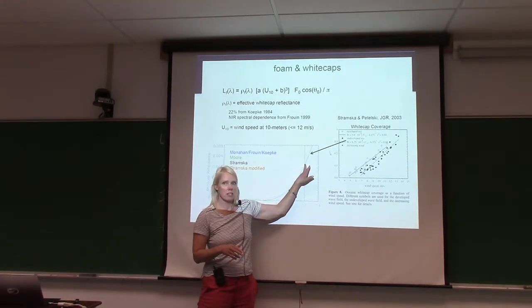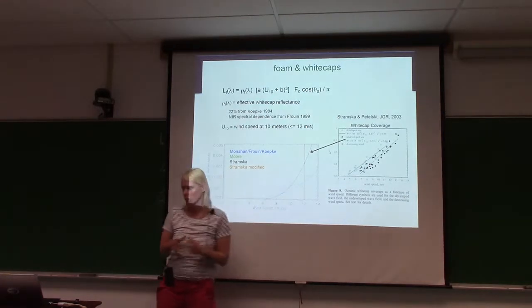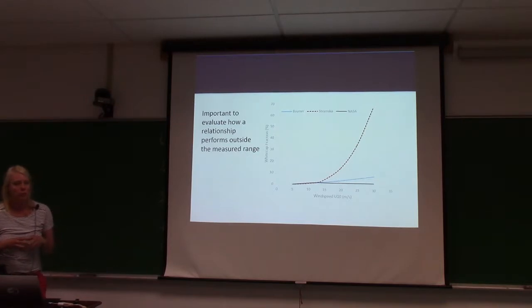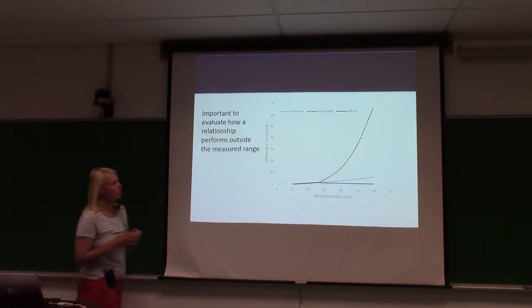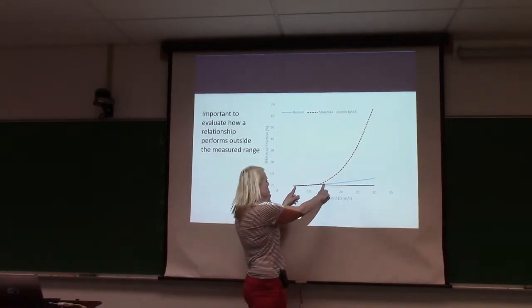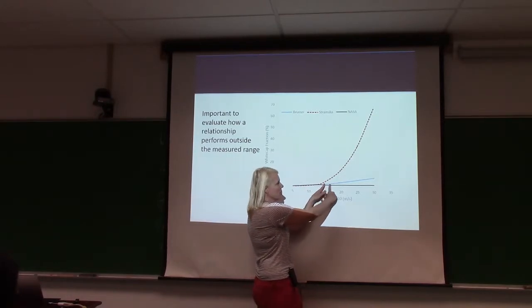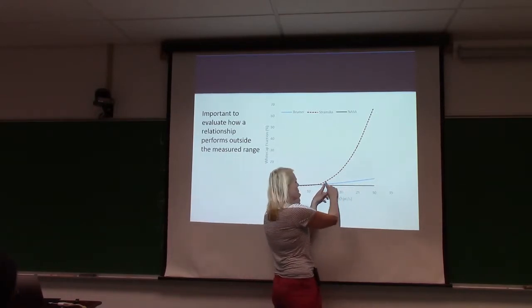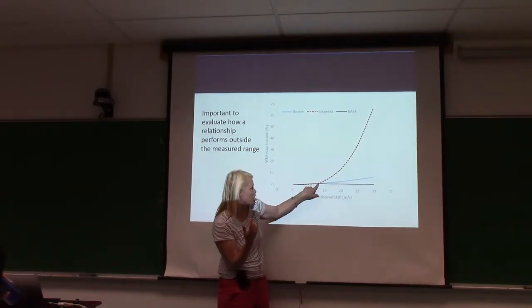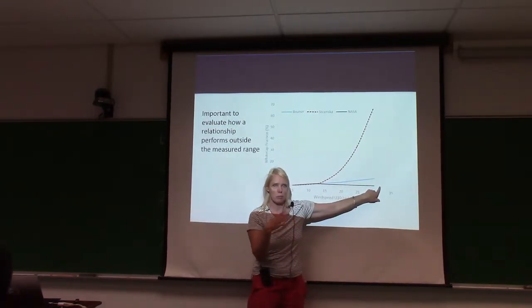These are different formulations. Somehow this black one that goes skyrocketing up is the one NASA chooses, except they recognize that this skyrocketing whitecap fraction with wind speed is way, way too high. So then they say at this point, we level it out. We're not going to follow this relationship anymore.